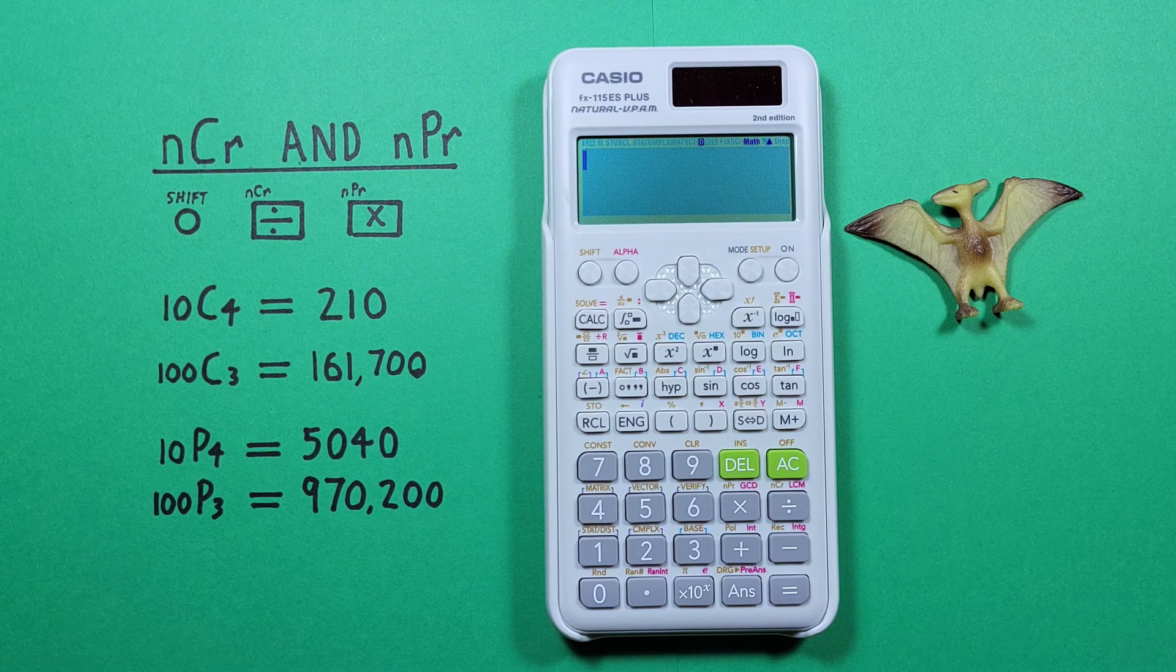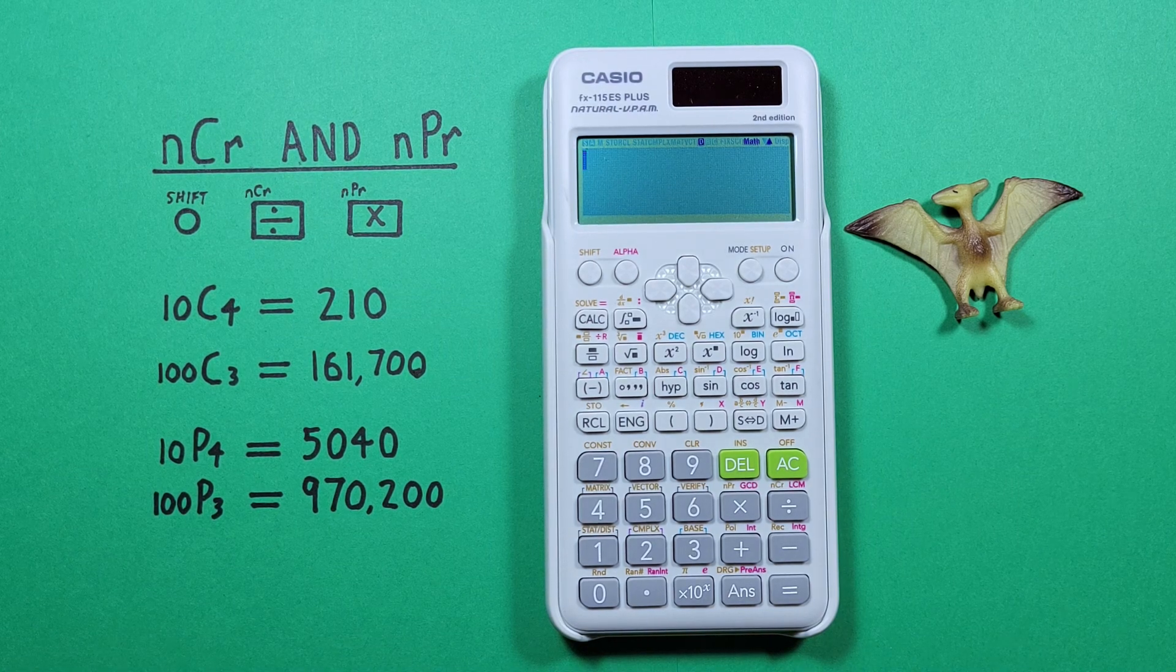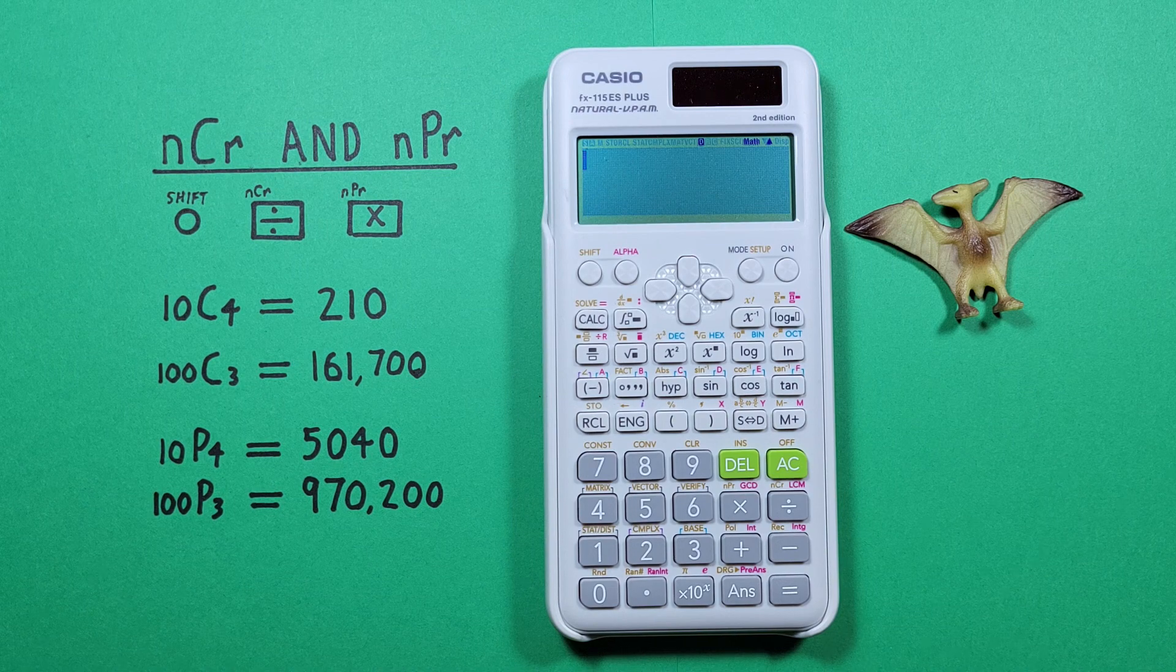We can also do permutations which is where you choose a number of items from a set and the order does matter.